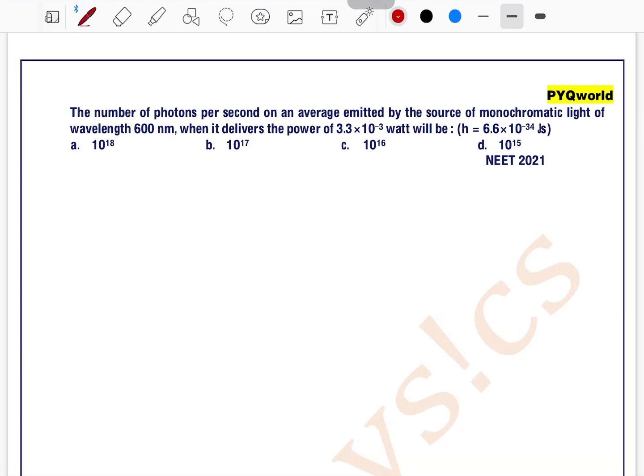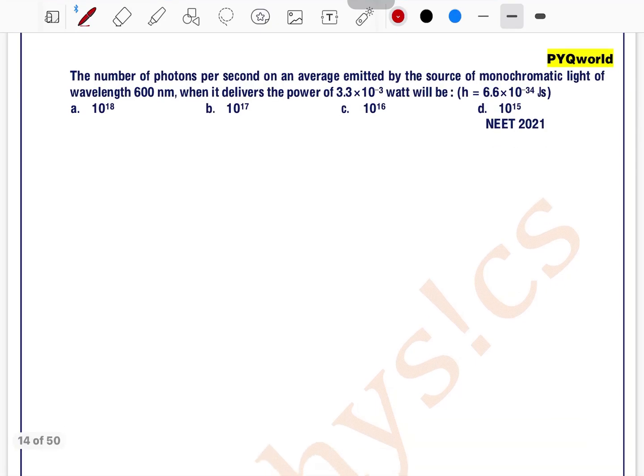The number of photons per second on an average emitted by the source of monochromatic light of wavelength 600 nanometer, lambda is equal to 600 nanometer, when it delivers the power of 3.3 into 10 to the power minus 3 watt.